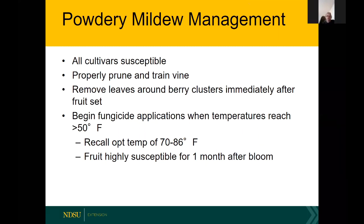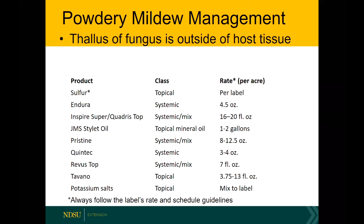Direct infection is going to be especially detrimental. Again, there's a list of products available in the Midwest Fruit Management Guide. In this particular case, sulfur and potassium salts are actually listed as effective — because sulfur can come in direct contact with the fungal tissue and kill it, since the fungus is on the outside of the leaf.